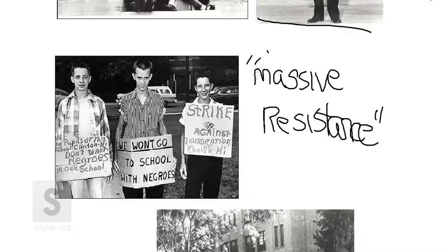Many states, Virginia included, passed laws to block desegregation — to legally prevent school systems, even if they wanted to desegregate, from doing so. They would lose all their state funding if they did. Some places simply shut down the schools. In Prince Edward County in Virginia, the local school board essentially voted itself out of business and said all public schools are shut down in order to prevent desegregation. One way they got around that was by offering private funds — essentially vouchers — to students to go to private schools for the next five years, meaning white students could still attend school, but African Americans were entirely excluded from any educational opportunities. Massive resistance really played a role in slowing the implementation of the Brown decision.